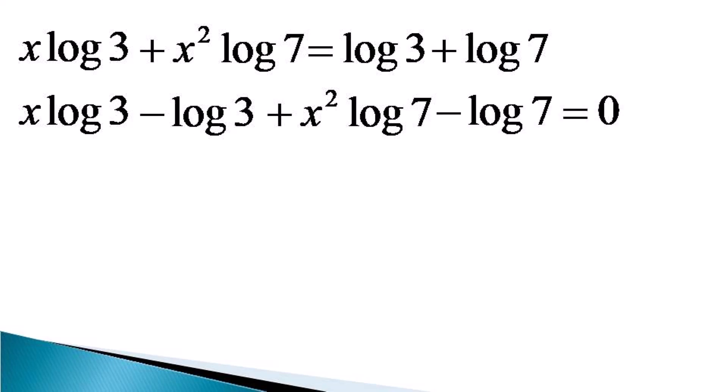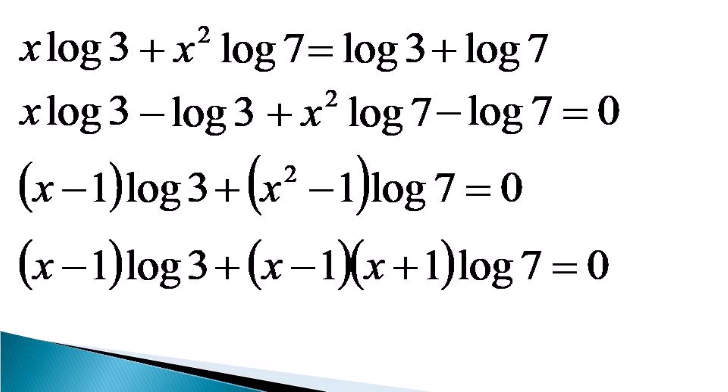Now we take log 3 and log 7 common from respective terms to get x minus 1 into log 3 plus x square minus 1 into log 7 is equal to 0, and x square minus 1 here can be factorized as x minus 1 into x plus 1.